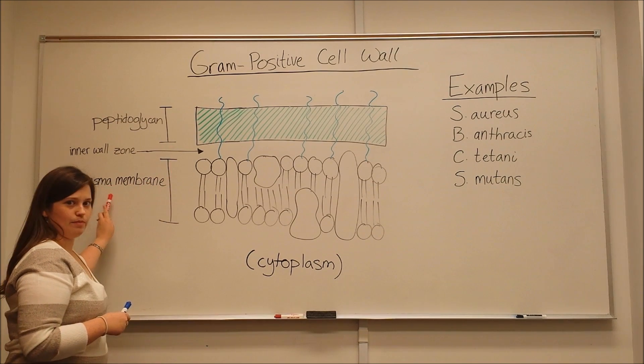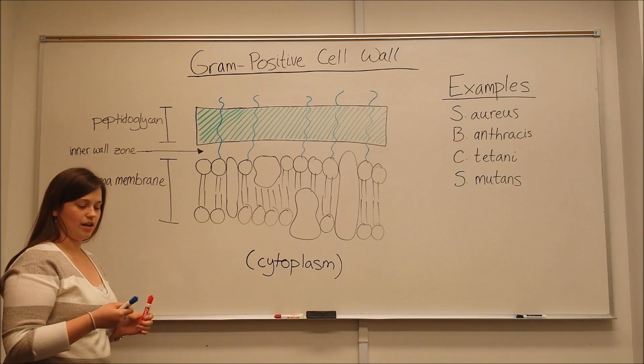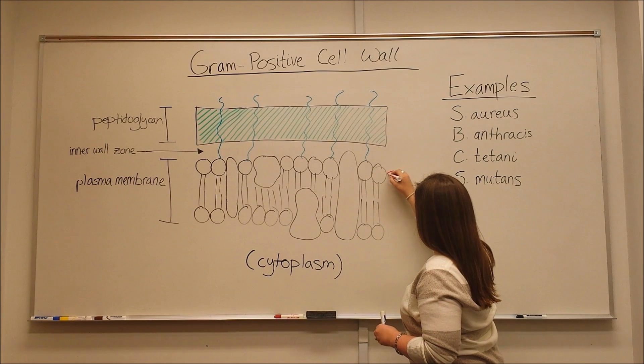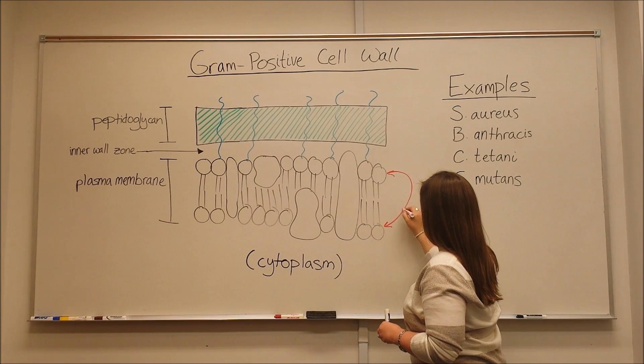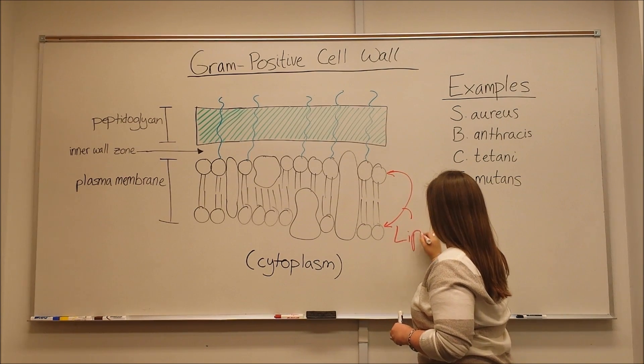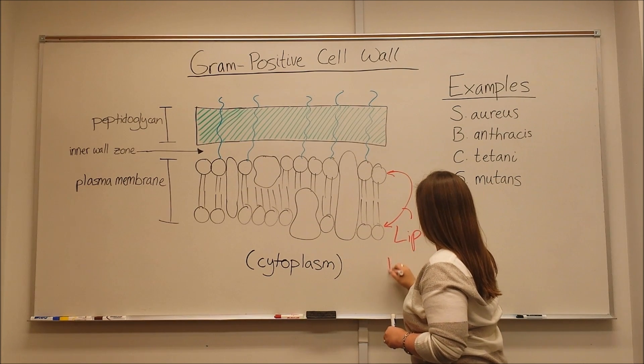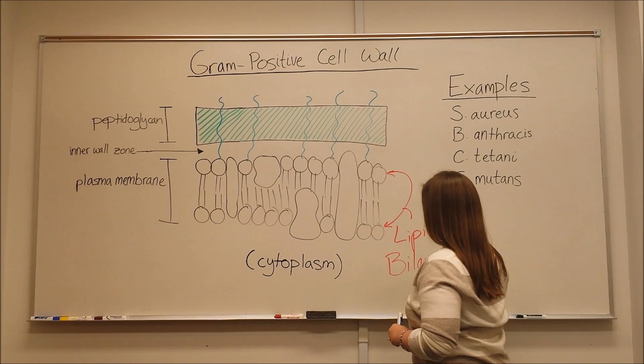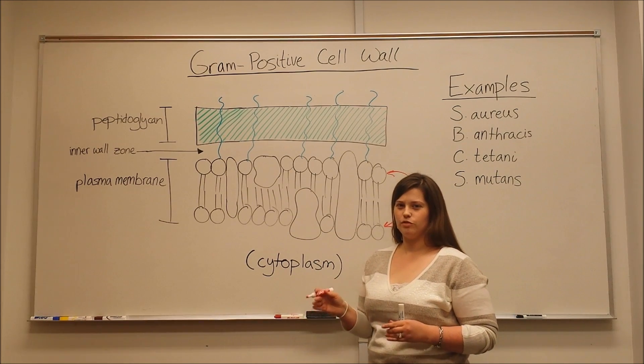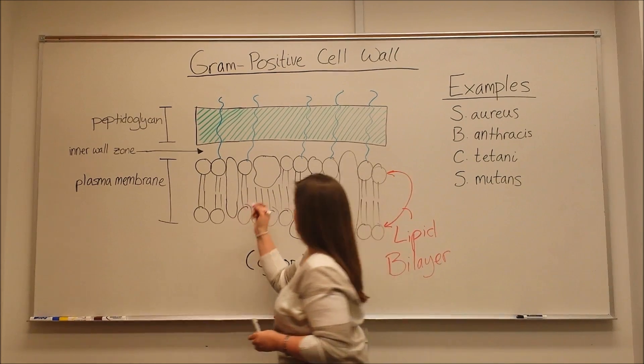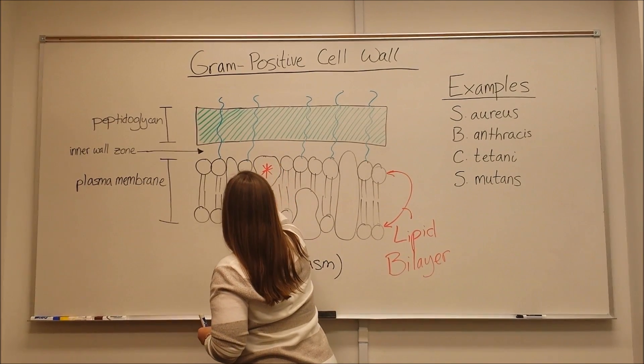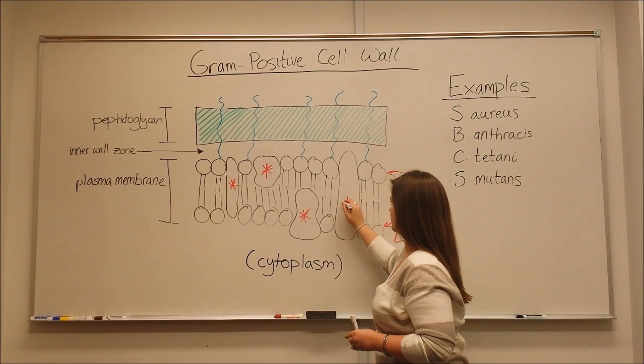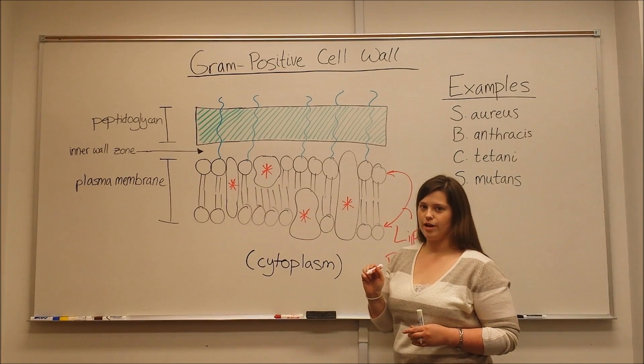Within this plasma membrane, you have two main components. These are the lipids, which are shown here, a lipid bilayer, and also several different types of proteins. I'll mark these with an asterisk each. So these are all proteins that serve different functions within that plasma membrane.